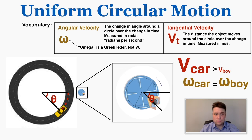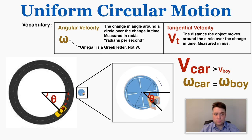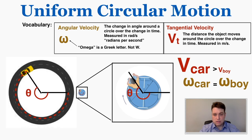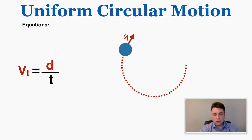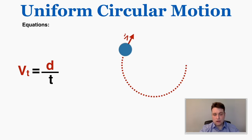Now I'm going to show you the equations for this unit and where they come from. Starting with tangential velocity: we know that velocity is displacement over time. Here the object travels all the way around the circle once, and if the circle has radius r, the total distance is 2πr — the circumference. The time to complete one full circle is the period T. So our first equation is: tangential velocity = 2πr / T.